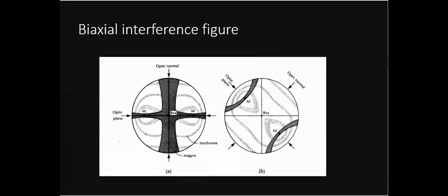The biaxial interference figure is similar to the uniaxial one but shows isochromes in a figure-of-8 pattern, unlike the circular isochromes in uniaxial. When the stage is rotated, the isogyres — which form a cross — split into two hyperbolas. The centers of those hyperbolas represent the emergence of the optic axes. This is called a biaxial acute bisectrix figure, with two optic axes visible.